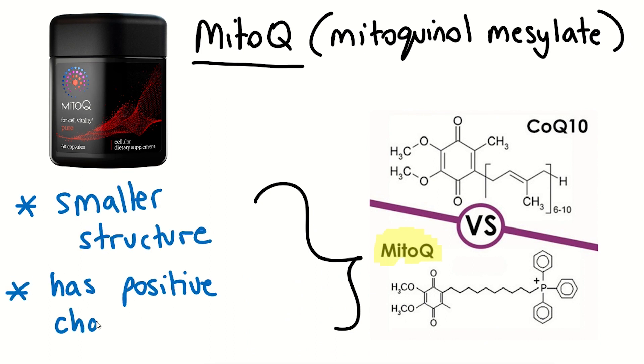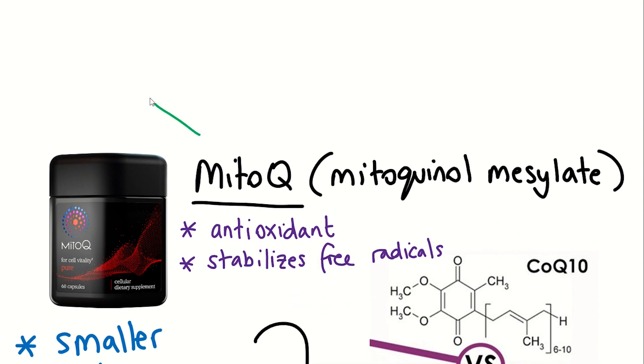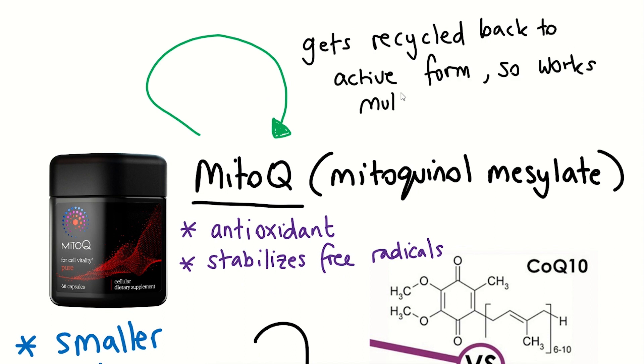MitoQ acts as an antioxidant and has the ability to neutralise free radicals. MitoQ does this by donating an electron to a free radical, stabilising it and making it unreactive. This doesn't just happen once. MitoQ can be recycled back to its active form and neutralise many more free radicals.